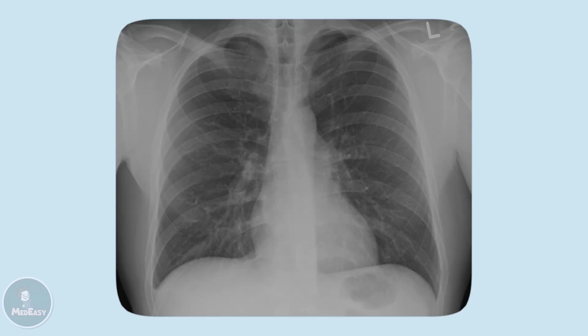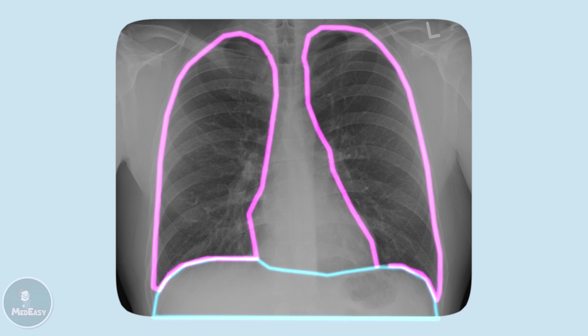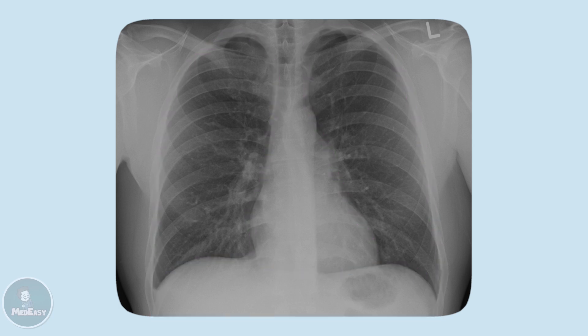This is a chest x-ray image. We can see the heart is bordered inferiorly by the diaphragm and by the lungs on either side. As for the heart itself, we can clearly make out its outlines. The left cardiac outline, called the cardiac contour, is made by the lateral border of the left ventricle, whereas the right contour is made by the lateral border of the right atrium. Below the right atrium we have the right ventricle, and above the left ventricle is the left atrium.